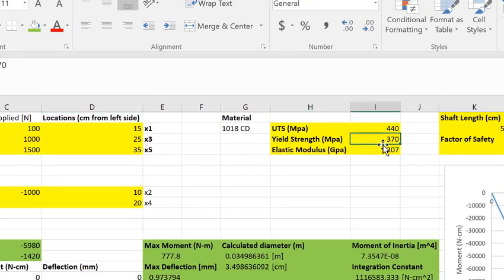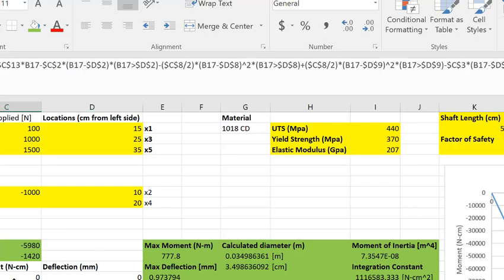You put the yield strength of the material, the ultimate tensile strength, the elastic modulus, and then you have to write equations so that you can figure out what the moment happens to be.